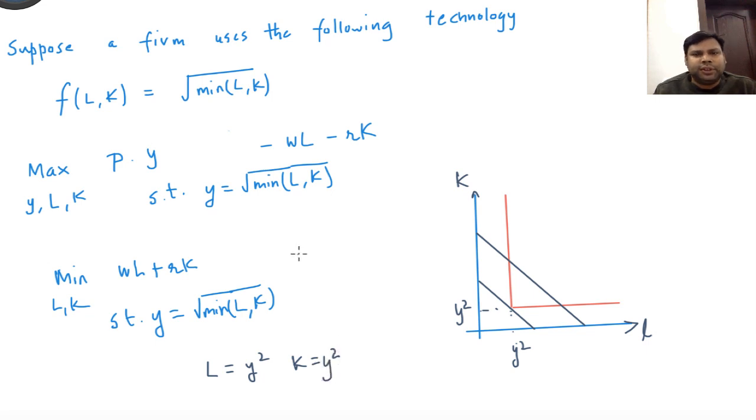Now we're going to substitute it into the cost so that we get the cost function. C equals (w plus r) times y squared.